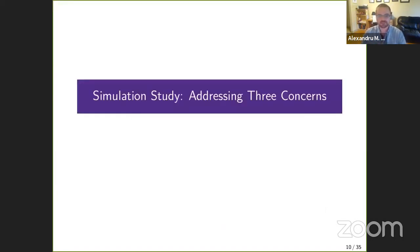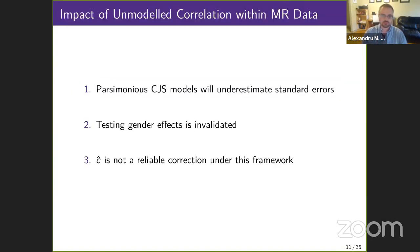I've conducted a simulation study that highlights three concerns that arise from using the standard CJS model to analyze data with dependent pairs. These are as follows: standard errors are underestimated for models that don't account for a gender effect. The likelihood ratio test between models comparing whether there's a gender effect in either recapture or survival actually loses interpretability. And the standard variance correction, known as c-hat, is not able to account for or detect this type of overdispersion.